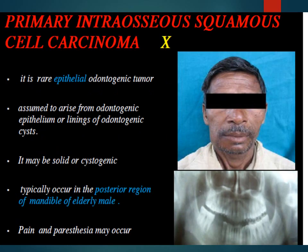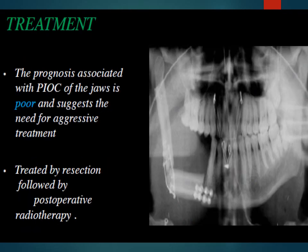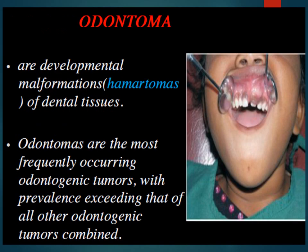Primary intraosseous squamous cell carcinoma is a rare epithelial odontogenic tumor, assumed to arise from odontogenic epithelium or the lining of odontogenic cysts. It may be solid or cystic, and typically occurs in the posterior mandible of elderly patients. Pain and paresthesia may occur. The prognosis is poor, suggesting the need for aggressive treatment by resection followed by post-operative radiotherapy.